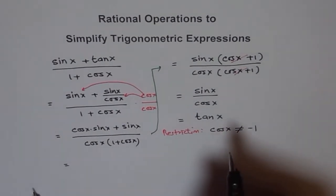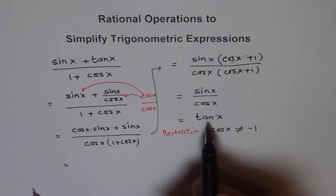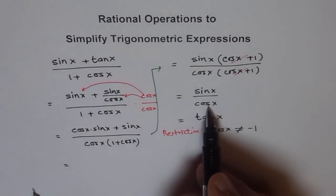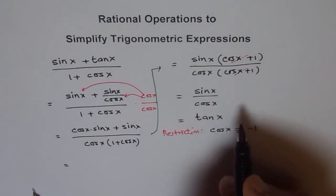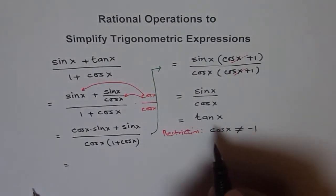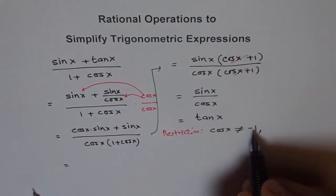Also remember that whenever you use tan x, since tan x is sin x over cos x, tan x is not defined when cos x is zero. Therefore, that is also our restriction. So cos x is not equal to minus 1 and cos x is not equal to 0.